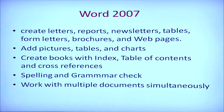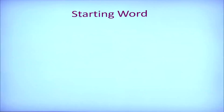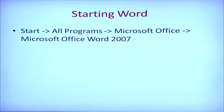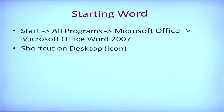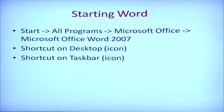Now let us see how to start Word 2007. There are many methods. The first method is to go to Start, then All Programs, Microsoft Office, and Microsoft Office Word 2007. The second method is to double-click on the shortcut on the desktop. The third method is to click the shortcut present on the taskbar. Now let us see a demonstration of all three methods.